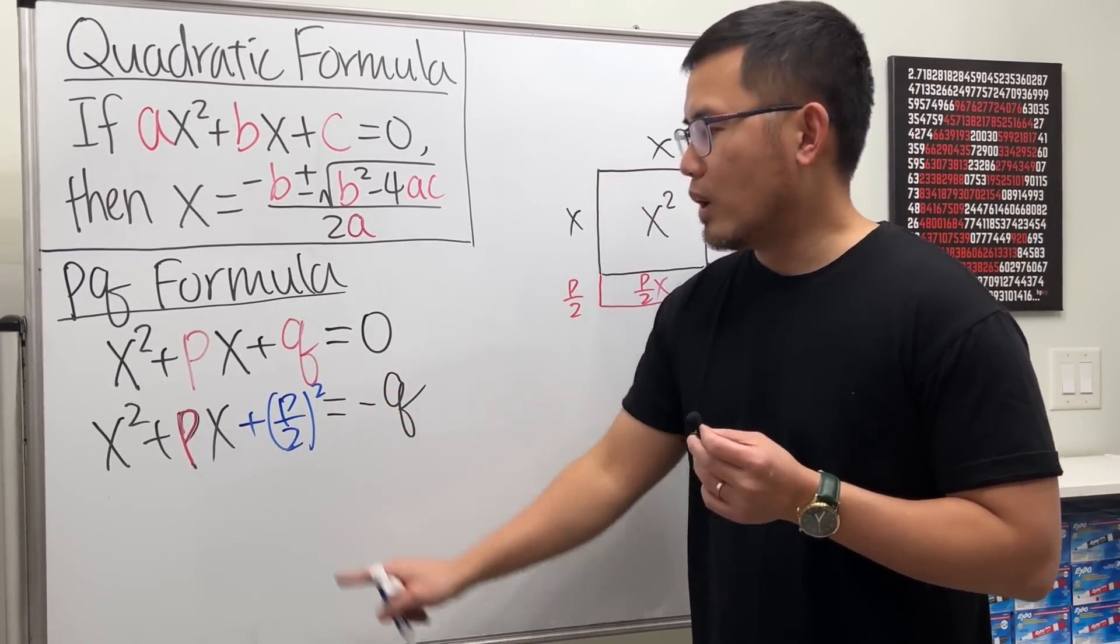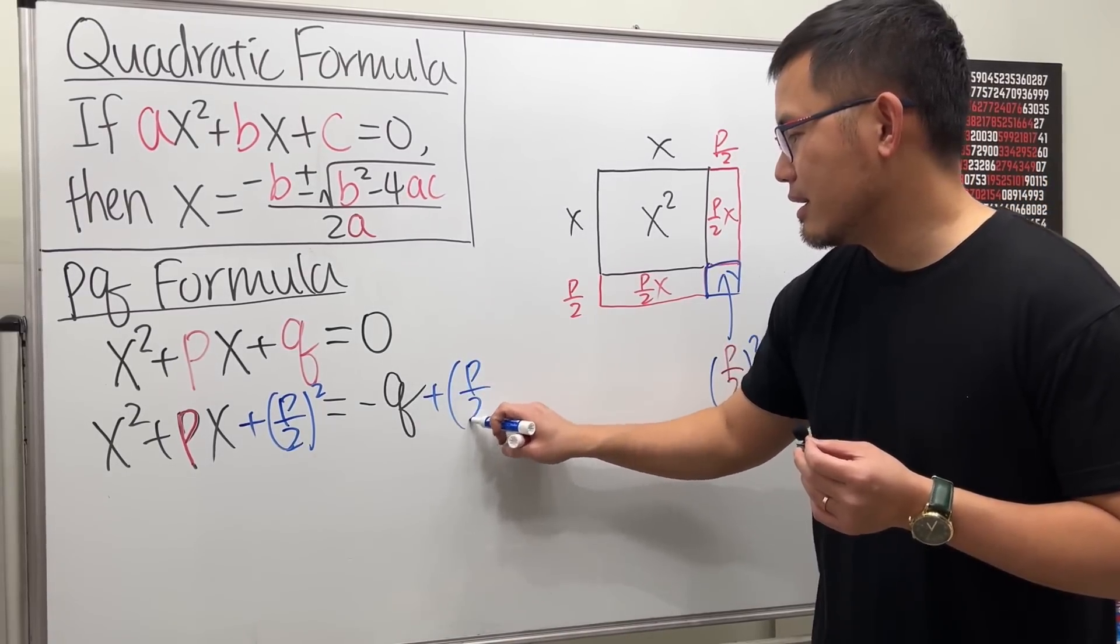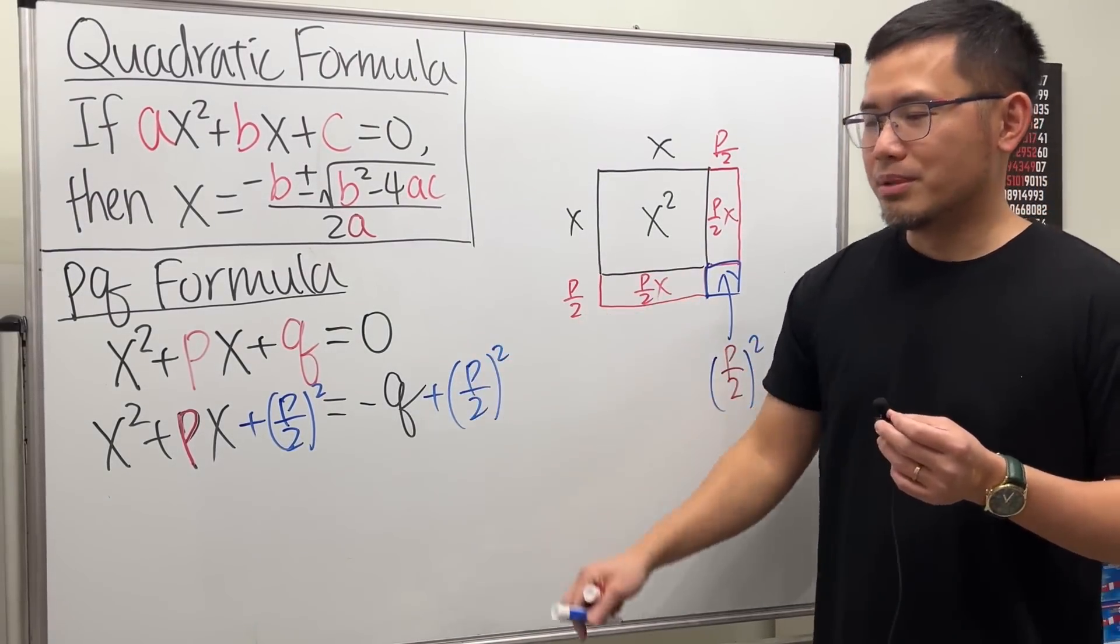So, let's go back here. We will have to add P over 2 squared. And, like always, whatever you do to one side of an equation, you do the same thing on the other side. And that's how we complete a square.